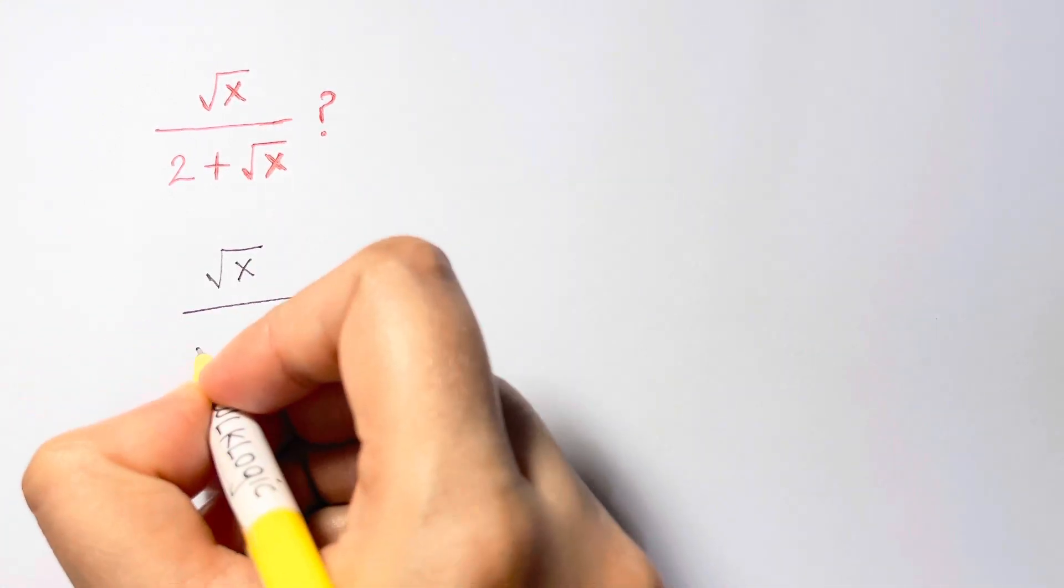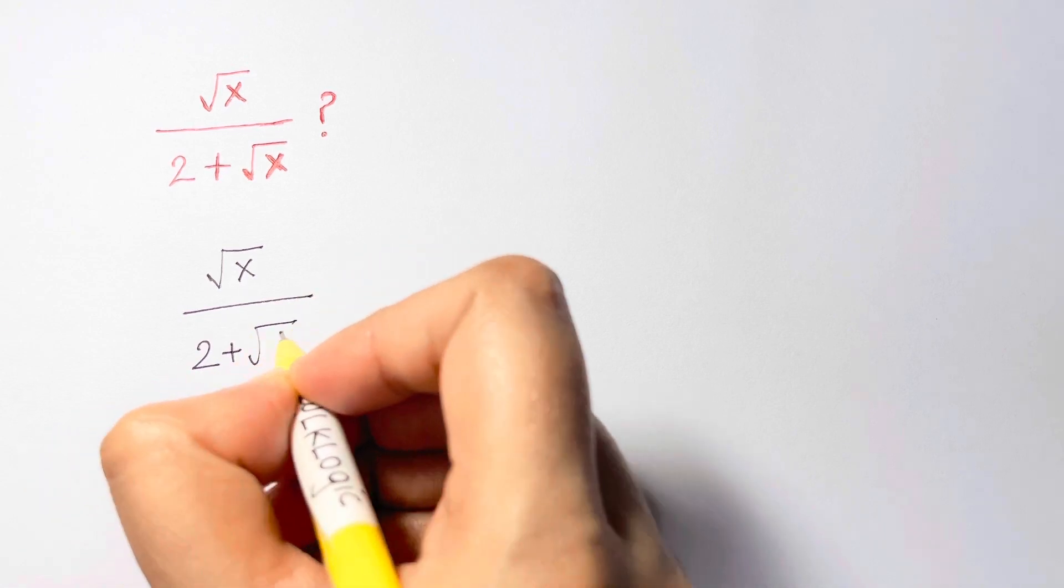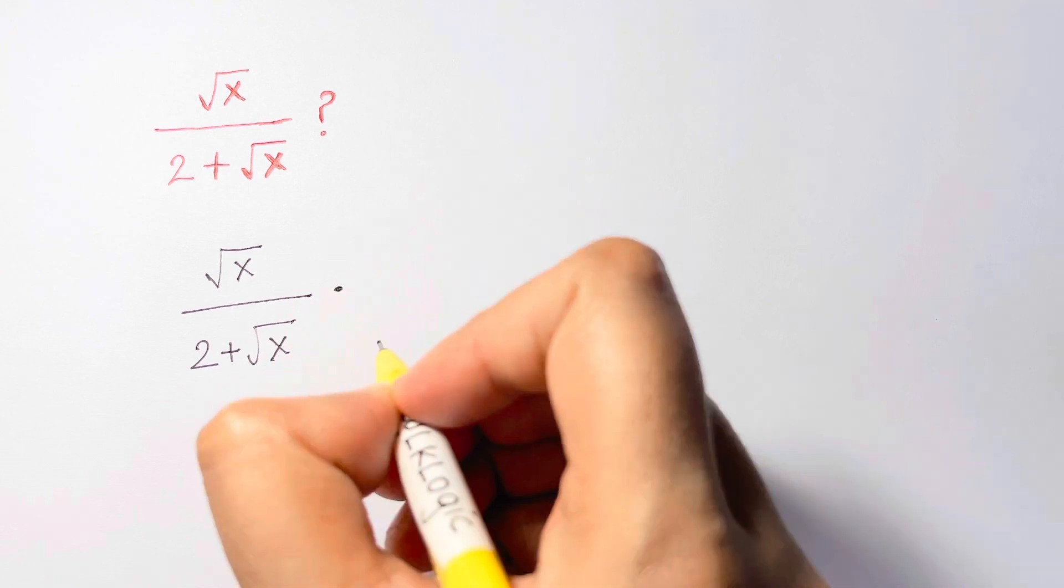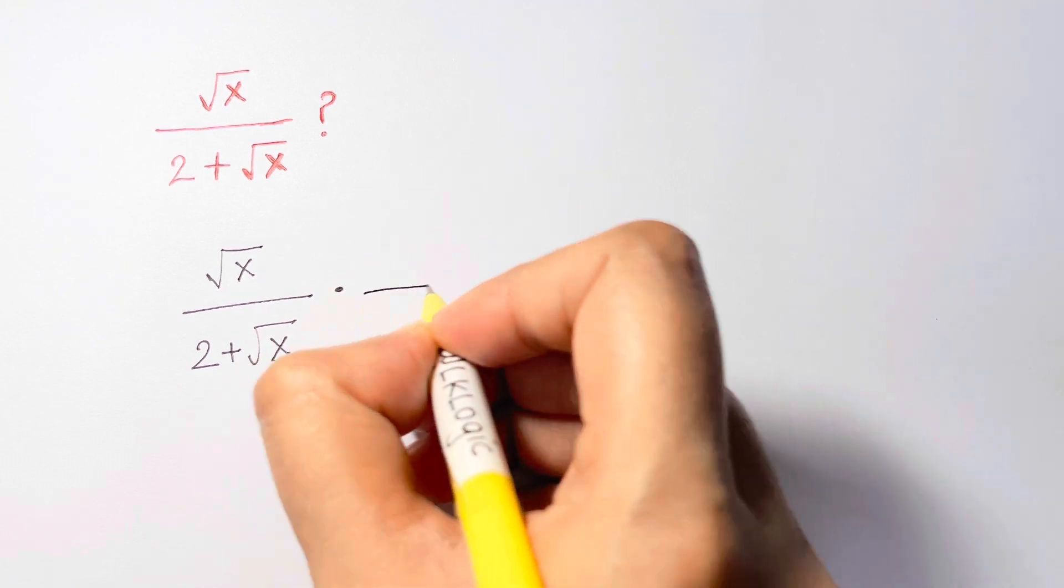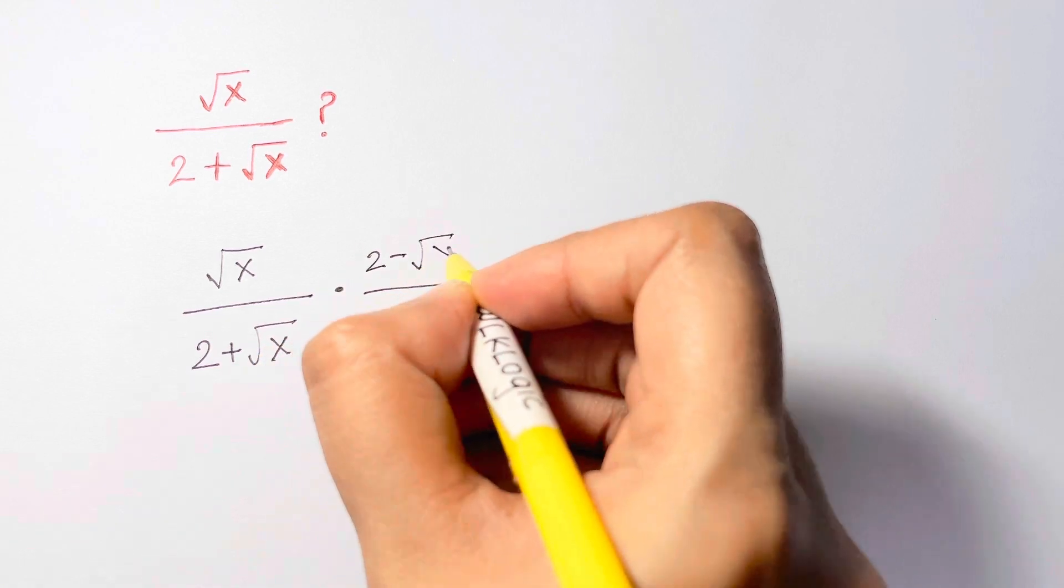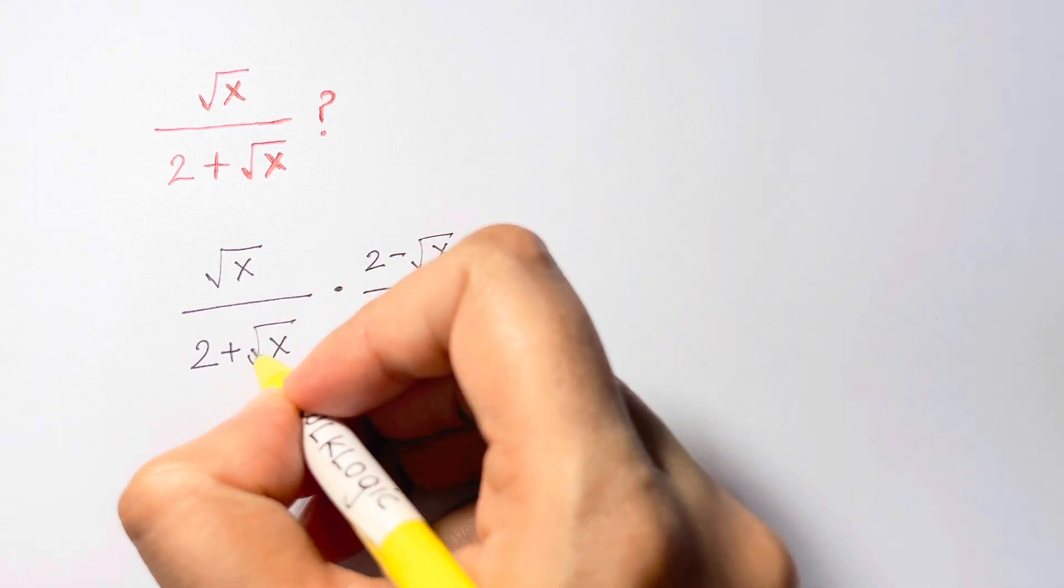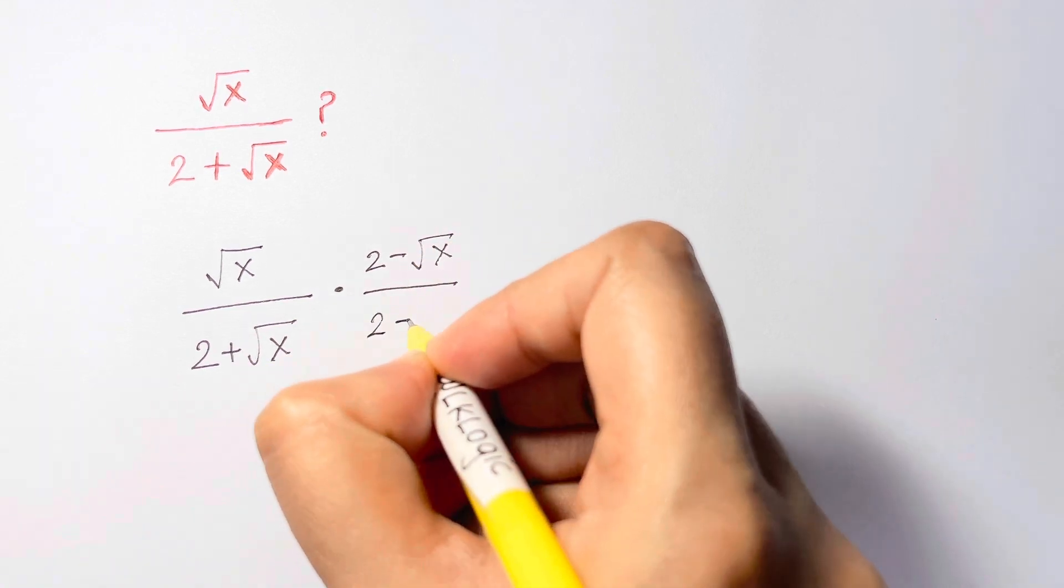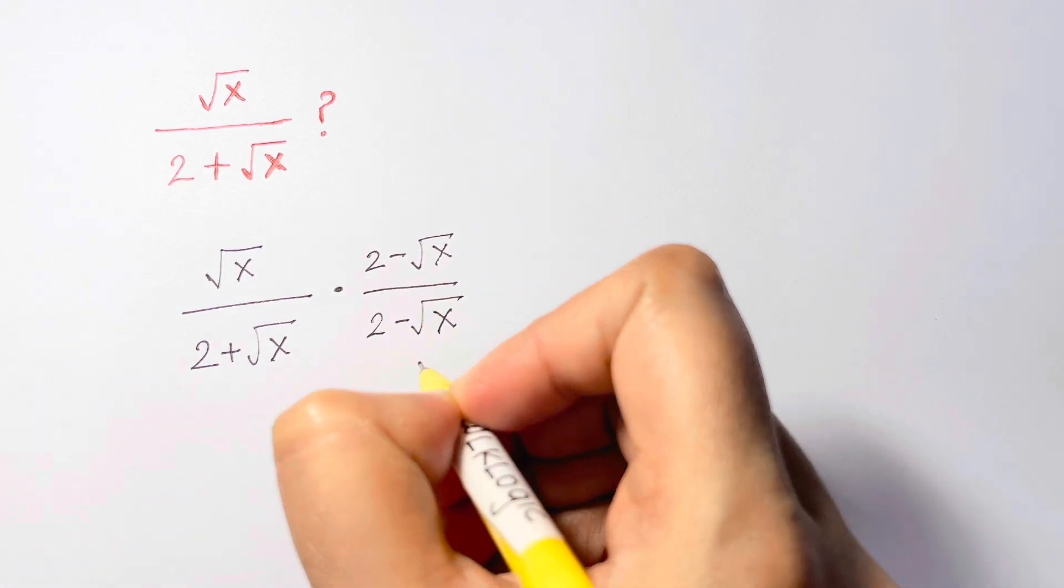So we just multiply the top and the bottom by 2 minus root x. Whatever is the expression at the bottom, just change the signs and multiply: 2 minus root x.